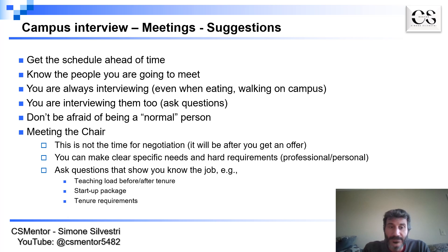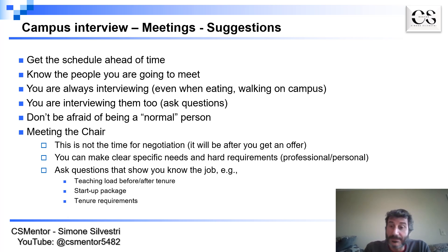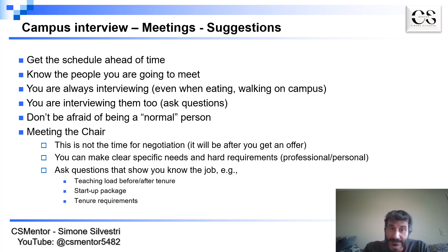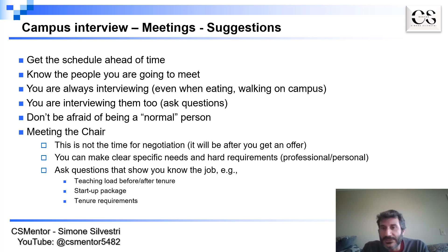For each person on the schedule, find out what their research is about, what their teaching experience is, and whether they have any major recent achievements. Of course, you want to know who is the chair, who is the director of graduate studies, and who is the dean, so you actually know who the people are that you're going to meet. I suggest printing the schedule and adding notes that can remind you of something about each person.